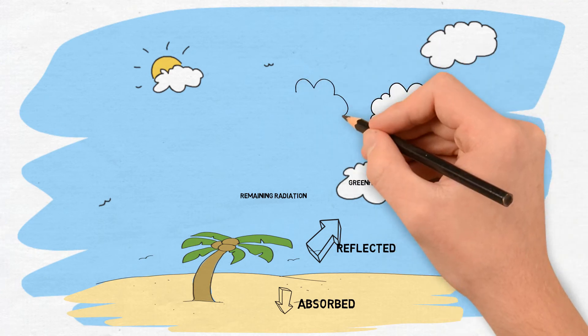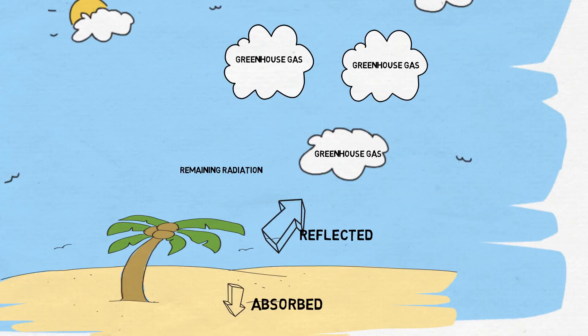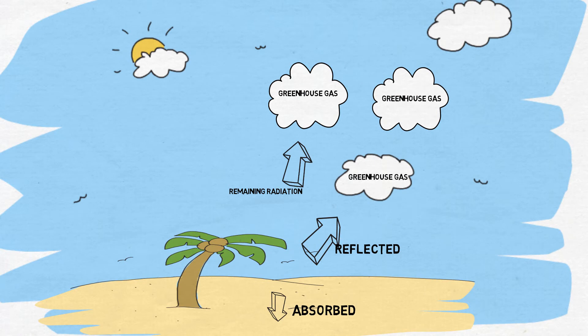But what happens if there are more greenhouse gases in the atmosphere? The remaining radiation would be absorbed by these greenhouse gases instead of being scattered back into space. So, the more greenhouse gases that there are, the hotter our atmosphere is gonna be.